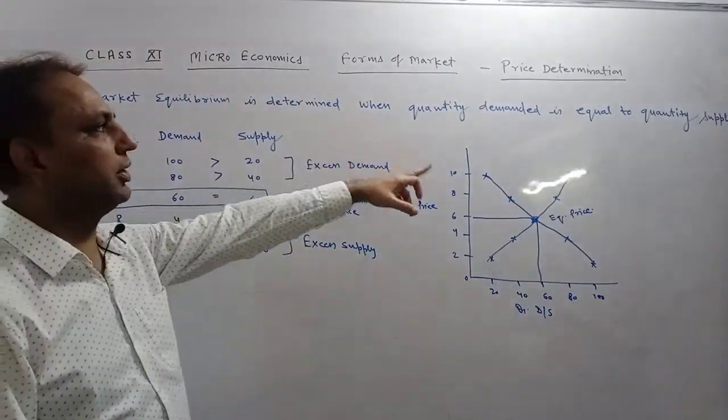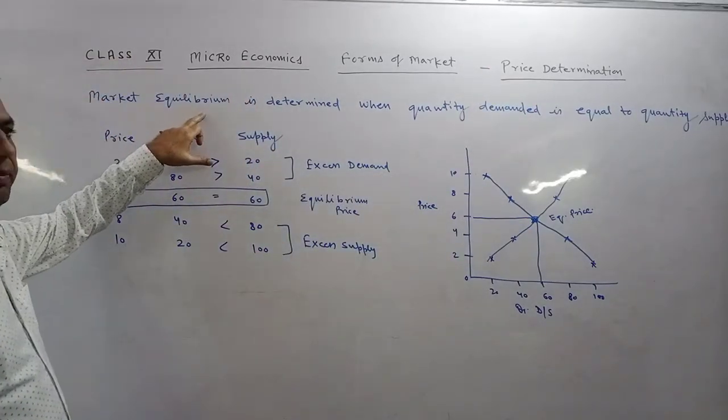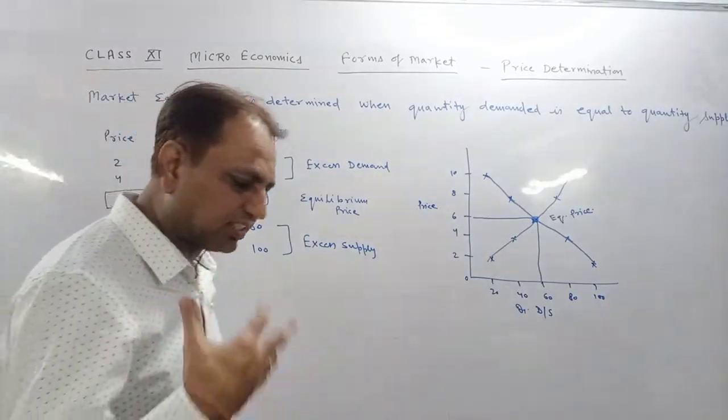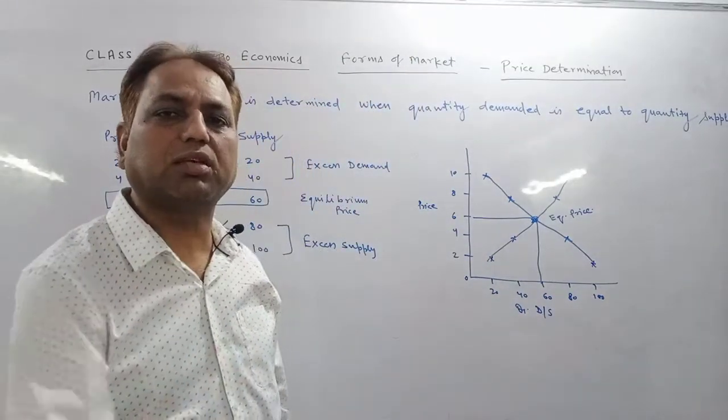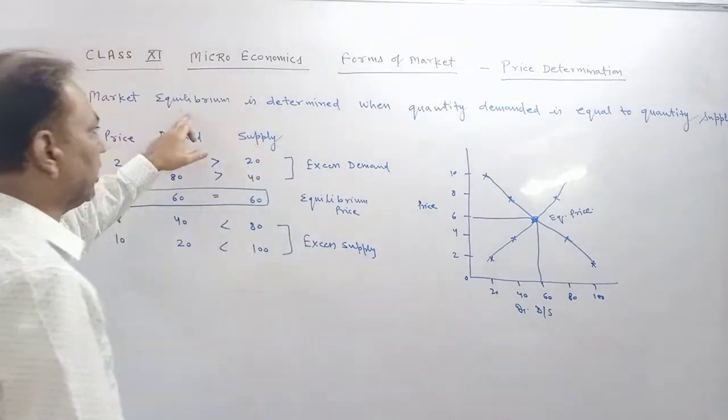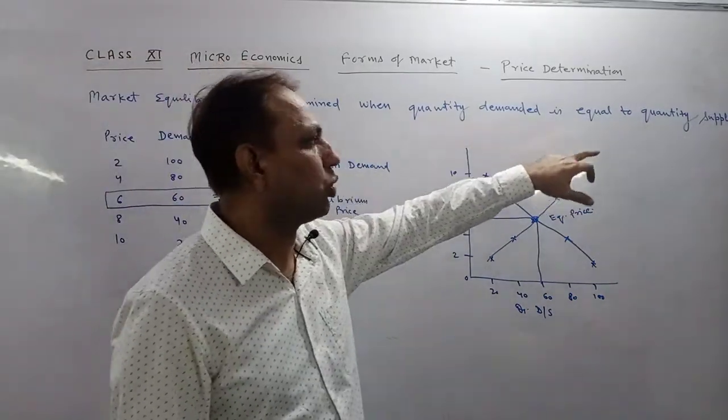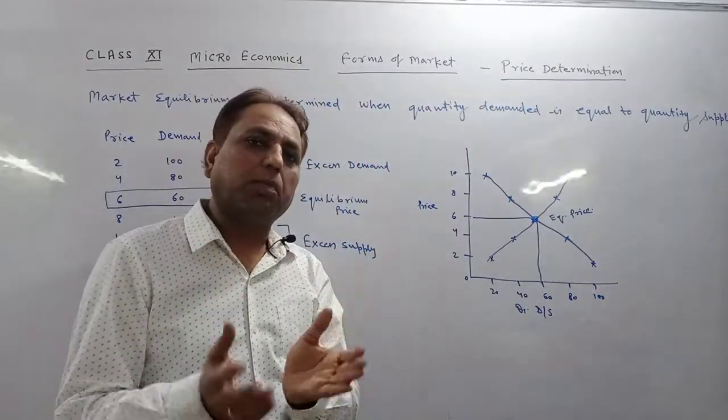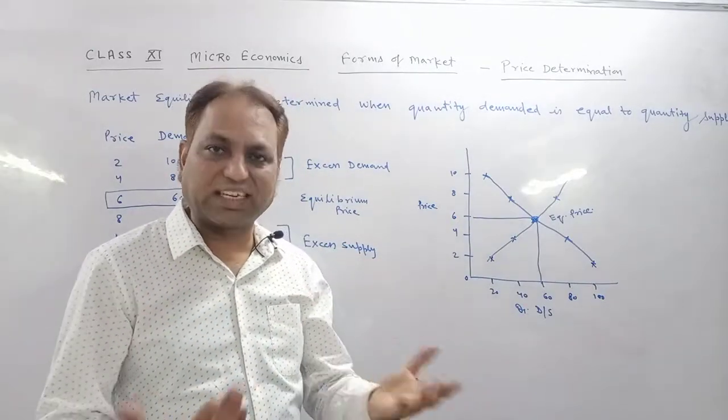So forms of market, price determination and that price determination is market equilibrium. Market equilibrium is the situation where market is in stability, where price is accepted by all the consumers, price is acceptable to all the suppliers, producers and manufacturers. So market equilibrium is determined when quantity demanded is equal to quantity supplied. It is a price level where both the consumers and the suppliers, producers are satisfied.